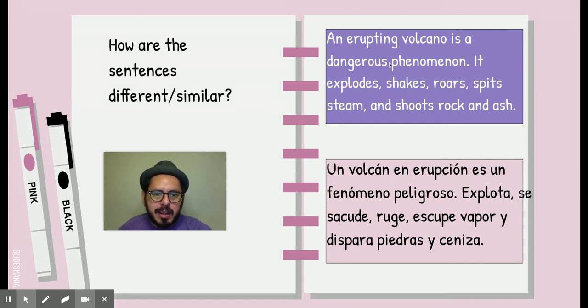Entonces, si se fijan, erupting y en erupción son—aquí en inglés es solo una palabra. Y en español tenemos que usar en, una preposición en, para decir que está en erupción en ese momento. Y acá solo nos basta poner un sufijo, ing, para que sepamos que es algo que está sucediendo. Y eso también lo vamos a ver más adelante.